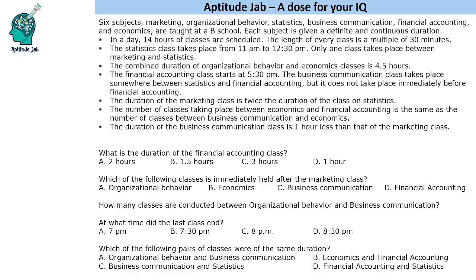Hello everyone, welcome to AptitudeJab. This is a scheduling-based problem in which there are six subjects taught at a B school, and each subject is given a definite and continuous duration with no gap between classes. In a day, 14 hours of classes are scheduled and the length of every class is a multiple of 30 minutes.